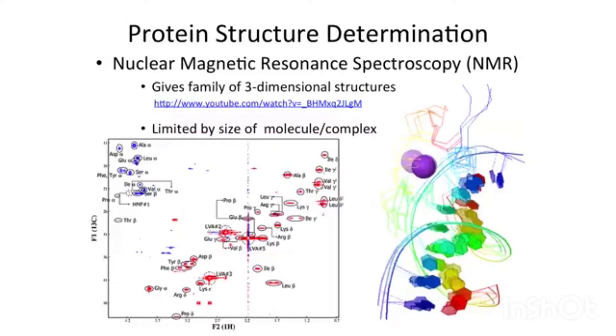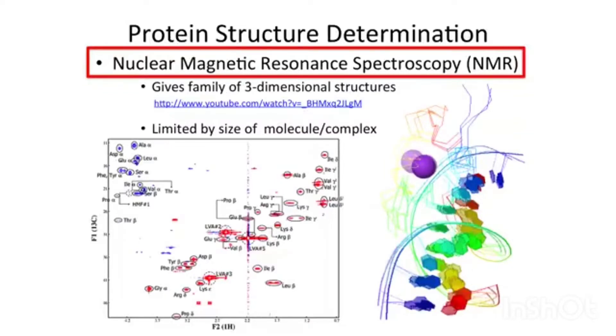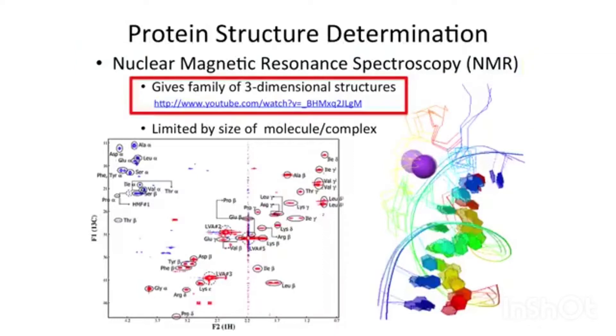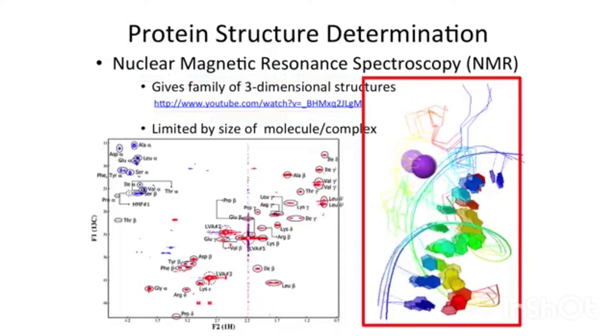The alternative for getting atomic level structures is nuclear magnetic resonance spectroscopy. This involves RF irradiation in a magnetic field. It's pretty much like what you do when you get an MRI, but there are lots of different frequencies and pulse patterns that can give you different kinds of information. The bottom line is that NMR gives a family of three-dimensional structures. You get data that looks like the graph on the left, and that can be interpreted in terms of the structure and the number of forms that structure can take.